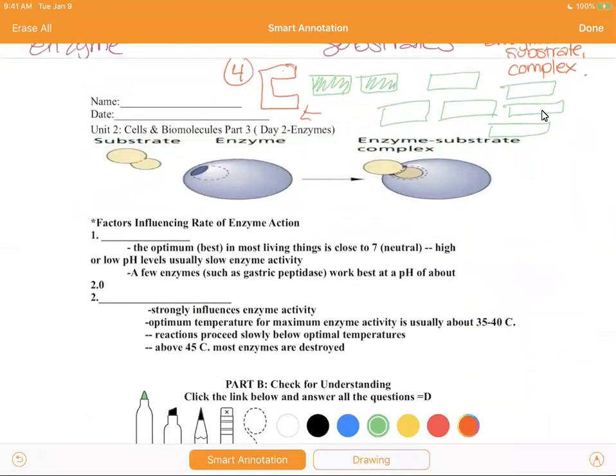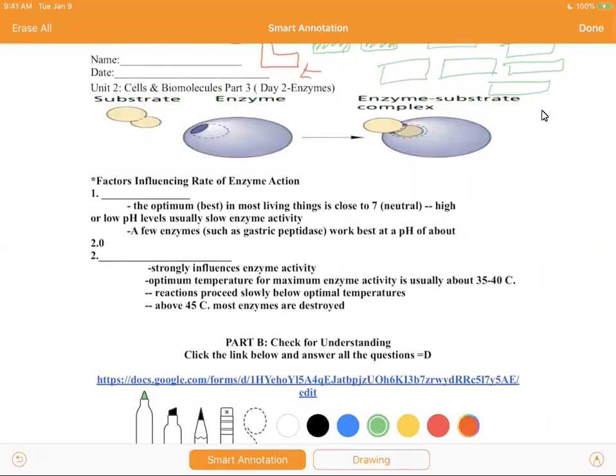So there's two factors that you guys need to know that influence the rate at which enzymes actually behave. The first one is pH. And we have a whole lab on pH. Don't worry. The optimum best in most living things is close to seven, which is a neutral pH. Again, don't worry, that'll all make sense when we do our lab. Higher or low pH levels usually slow down enzyme activity.